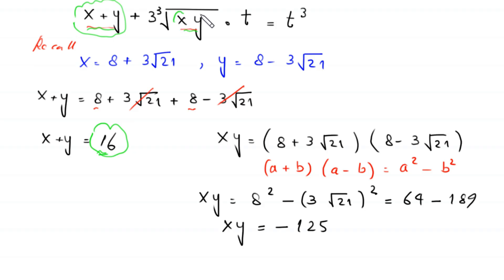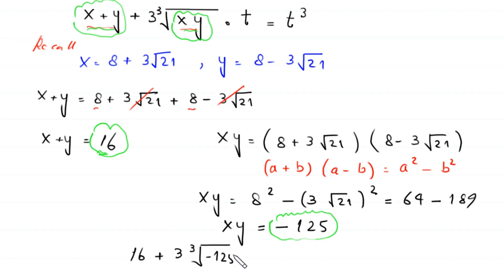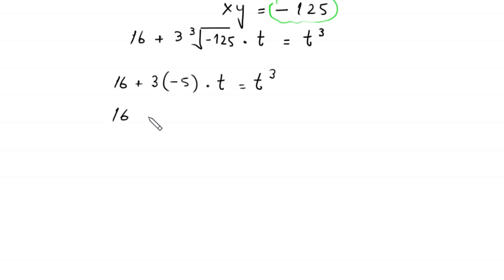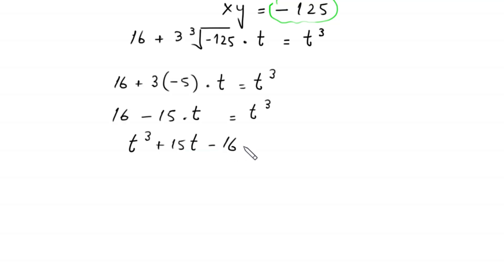Substituting x plus y equals 16 and x times y equals negative 125 into the equation, we get: 16 plus 3 times cube root of negative 125 times t equals t cubed. Since cube root of negative 125 equals negative 5, this becomes 16 minus 15t equals t cubed. Rearranging: t cubed plus 15t minus 16 equals 0.